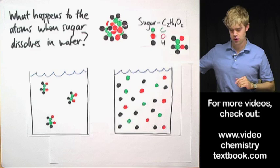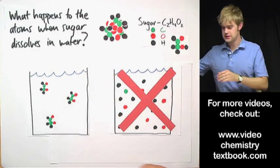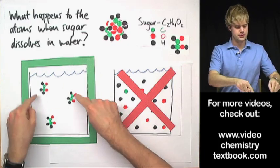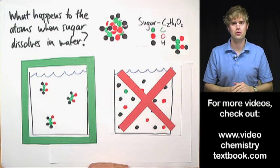Well, it turns out the atoms do not break apart when sugar dissolves. Instead the right answer here is that the molecules stay as molecules and they float around in the water.